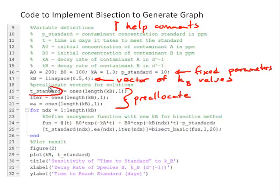And then we're going to pre-allocate some vectors to store our results in. We want to calculate the time to reach that standard value. We'll define that as T_standard. We'll pre-allocate that with the same length as KB so that those two vectors are the same length. And then we'll also keep track of how many iterations it takes for each solution and what is the approximate relative error in each solution.